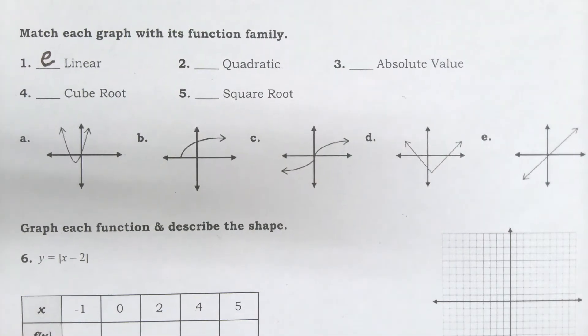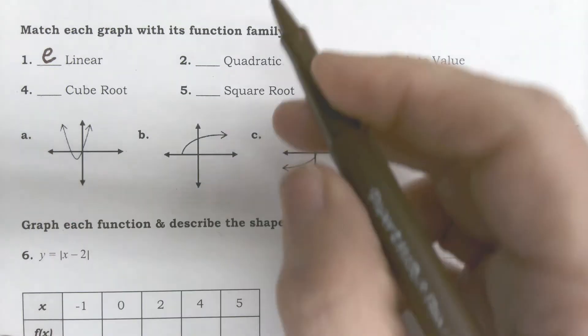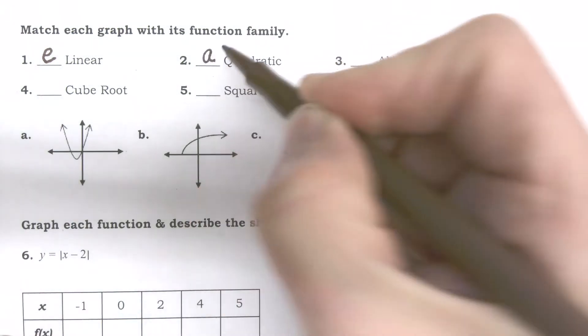A linear function is a line, so linear function is E. Then we did something called quadratic. Quadratic was a squared function. Squared. And it had the look of a U. Very good, Trev. A. Excellent. Okay.